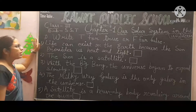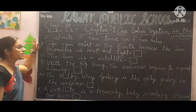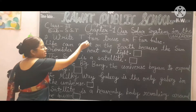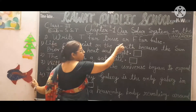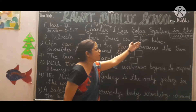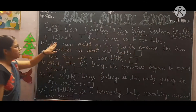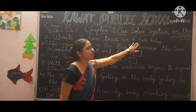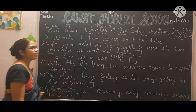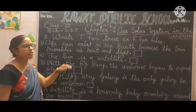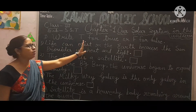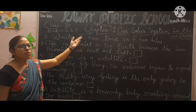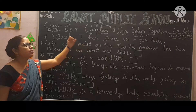Question number 1 — listen carefully. The question is: write T for true or F for false. You know very well what T and F mean. True means right, F means wrong — false means wrong.